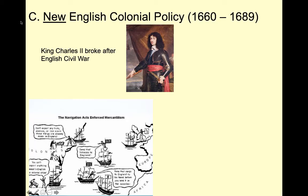Part two of our lectures on establishing the New England colonies. In part one, we talked about the founding of Plymouth and Massachusetts, Connecticut, Rhode Island, and a little bit on New Hampshire. We also talked about their mixed economy and economic growth. So now in part two, we're going to talk about the increasing influence of England in the New England colonies' government.